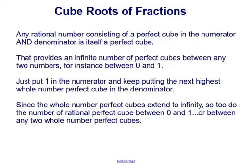Any rational number consisting of a perfect cube in the numerator and denominator is itself a perfect cube. That provides an infinite number of perfect cubes between any two numbers — for instance, between 0 and 1, you can put 1 in the numerator and keep using the next highest whole number perfect cube in the denominator, since 1 is itself a perfect cube. Since whole number perfect cubes extend to infinity, so too do the rational perfect cubes between 0 and 1 or between any two whole number perfect cubes.